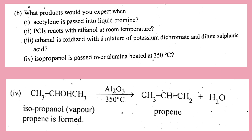Number four: isopropanol is passed over alumina heated at 350 degrees Celsius. Isopropanol, CH3CHOHCH3, over alumina Al2O3 at 350 degrees Celsius gives CH3CH2CH2 and H2O. This is the dehydration of alcohol equation.